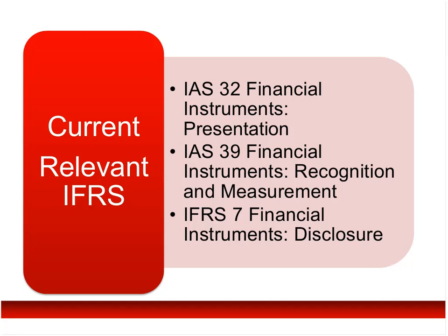IAS 32 probably stands on its own two feet a little bit better than IAS 39, but IAS 32 deals far more with entities issuing financial instruments — particularly entities issuing loan notes and certain sorts of shares. Lots of space in IAS 32 is dedicated to identifying whether something is equity shares or not. And finally, you've got IFRS 7, which deals with the disclosure elements of financial instruments under IFRS.